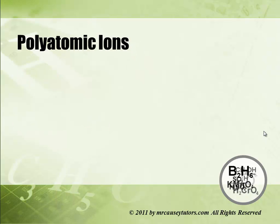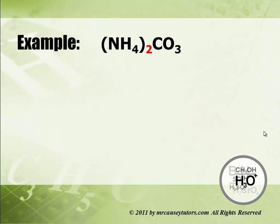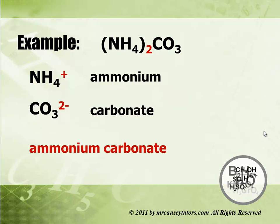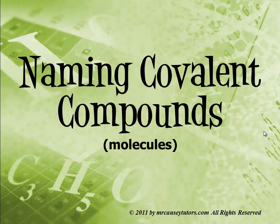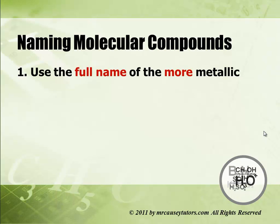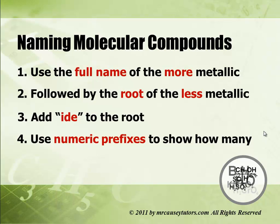Polyatomic ions are treated as a single unit and you must know the charge of the ion. Ammonium (NH4) has a plus one charge, while carbonate has a negative two charge. They don't balance, so we add two ammonium to make sure it's balanced — giving us ammonium carbonate. In naming covalent compounds — same as molecular compounds — use the full name of the more metallic element, followed by the root of the less metallic element and add -IDE. Use numeric prefixes to show how many. We only use numeric prefixes with covalent compounds.